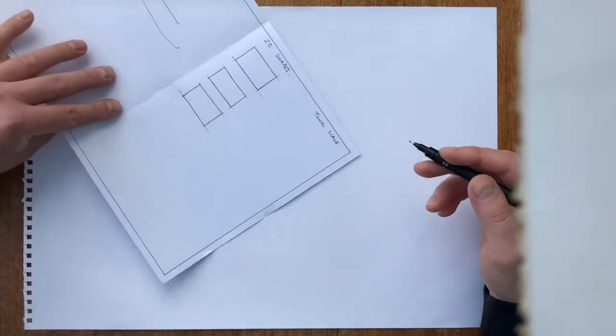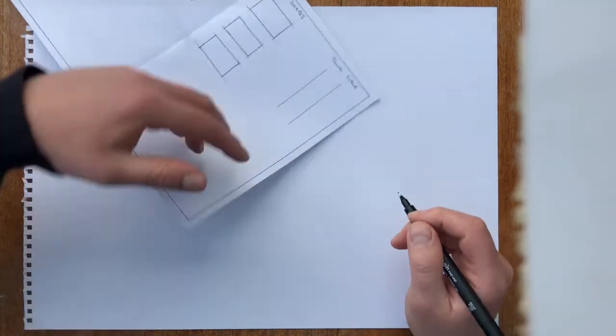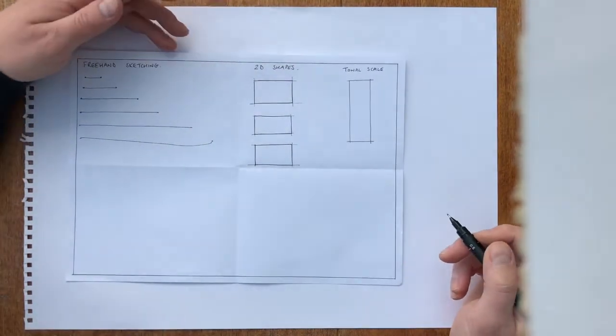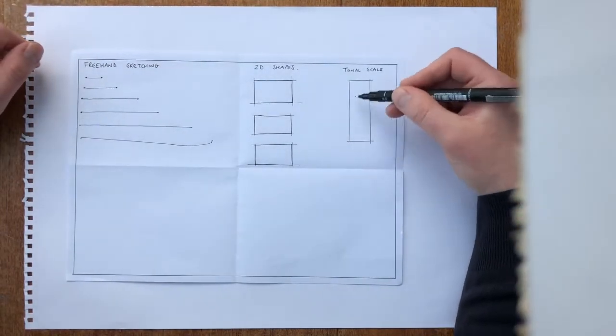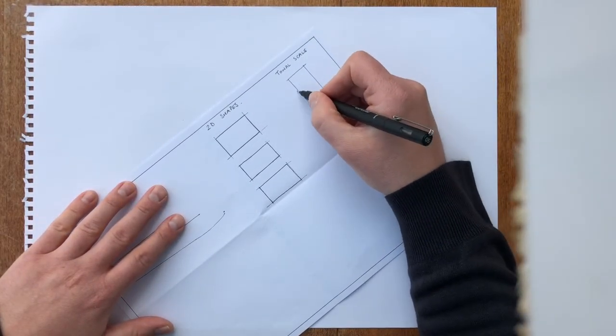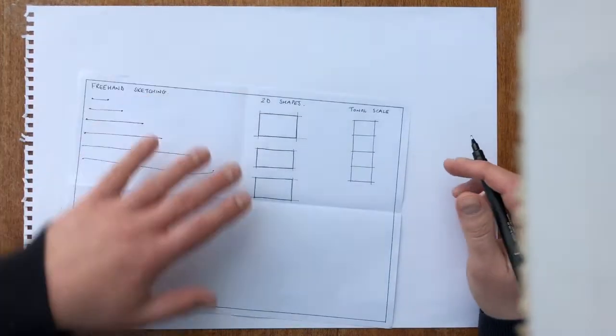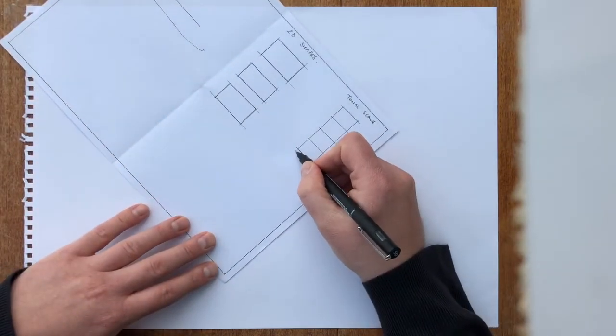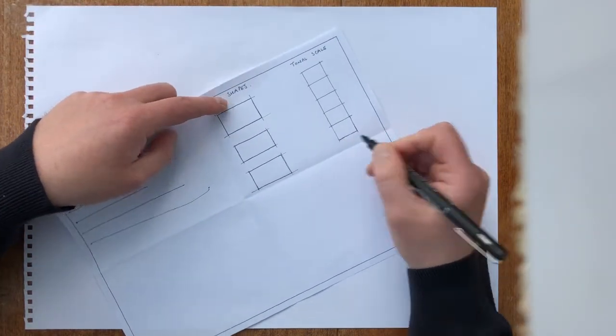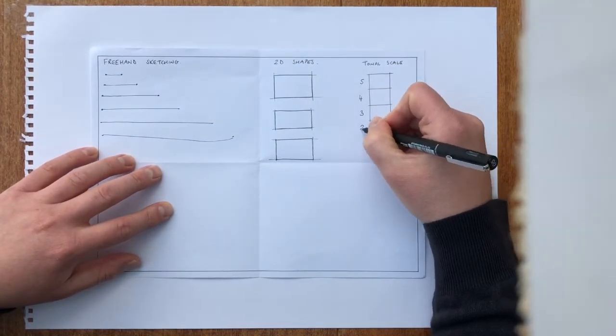So tonal scale, we're going to draw five boxes. First of all, I'm going to draw a large rectangle. Again, remember to turn the paper. I like five boxes. What I'm going to do is split this into four though, just to get the boxes even. So I'm going to divide that by two. The top box here, divide that by two. The bottom box here, divide that by two. And to get the fifth one, I'm going to add this box on the bottom. So I'm going to extend these lines here and make a box the same size. I want to number these going from five at the top, four, three, two, one.